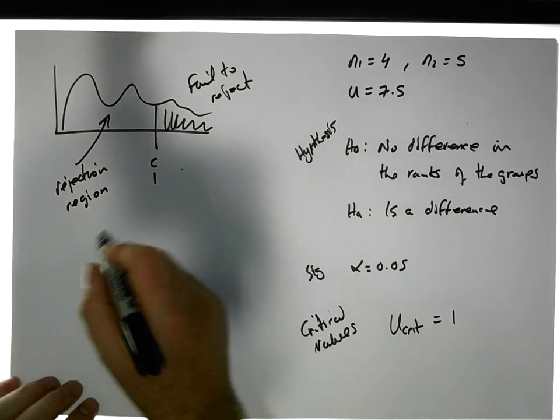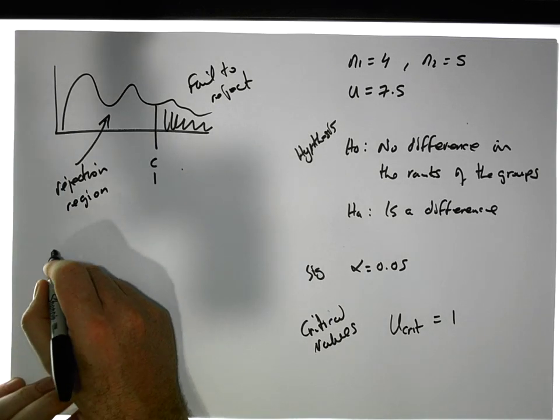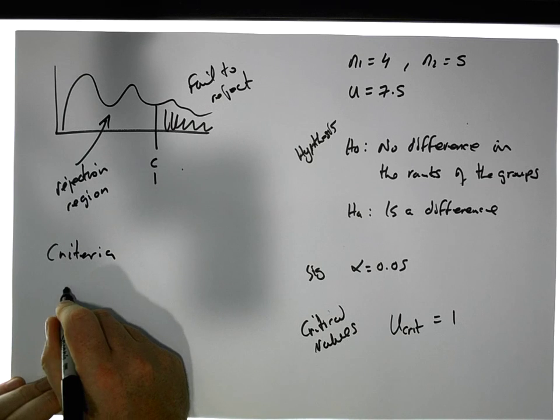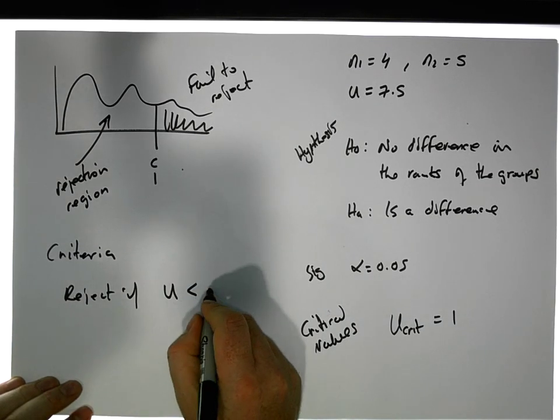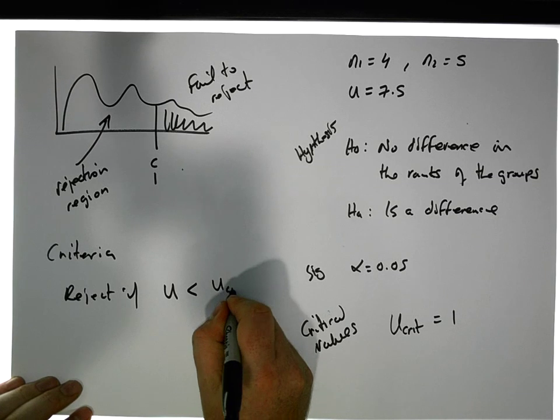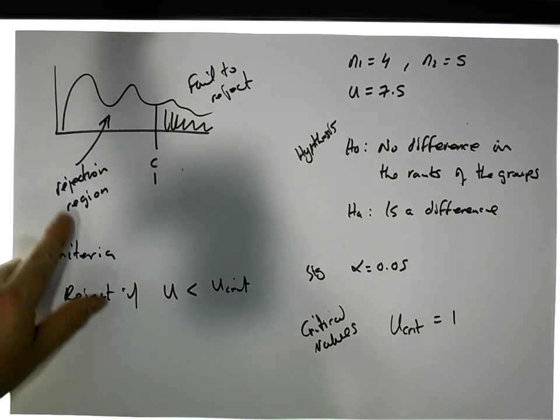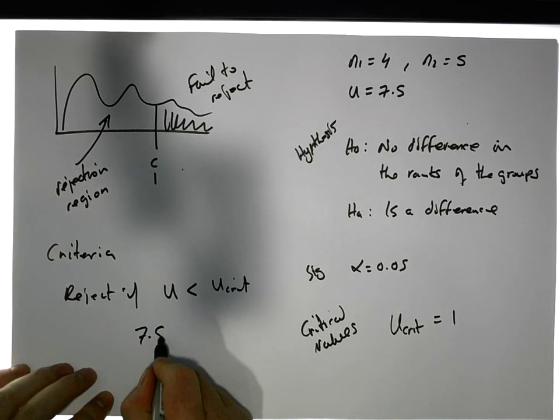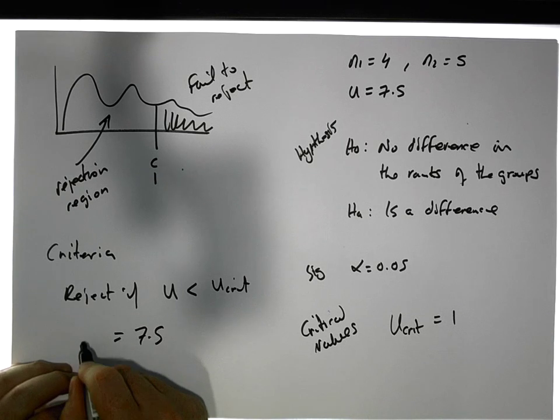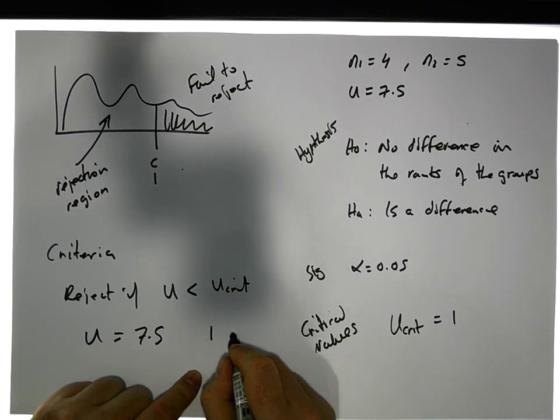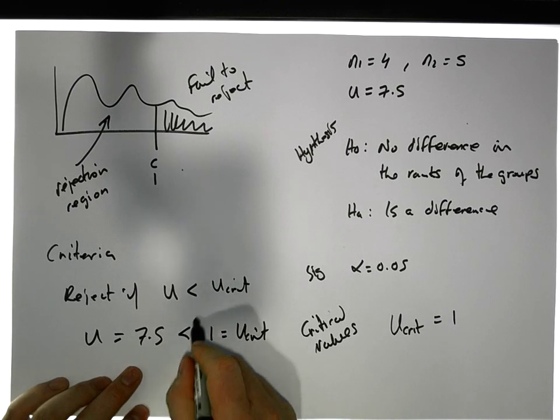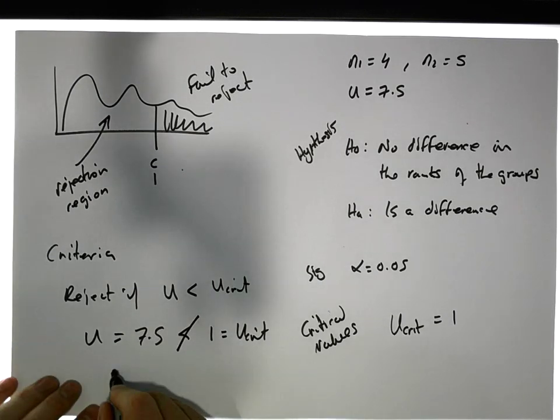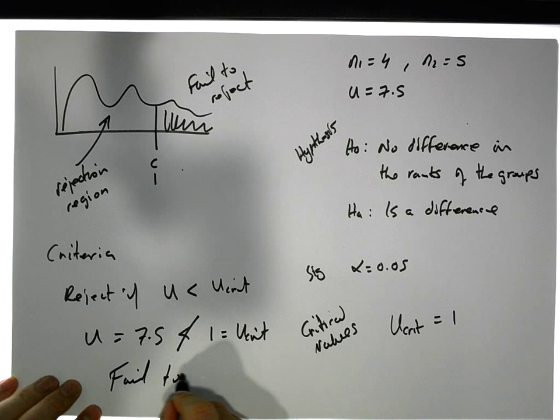The criteria is we reject if the test statistic is less than the critical value. In our case, our test statistic is 7.5, and our critical value is equal to 1. Clearly, 7.5 is not less than 1, so what we do is we fail to reject.